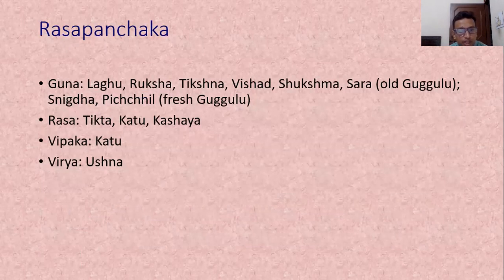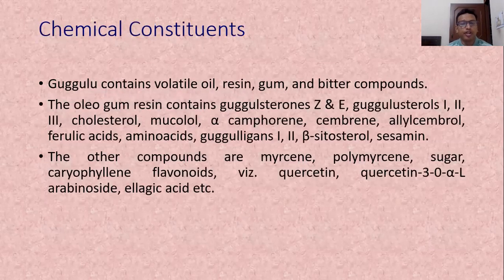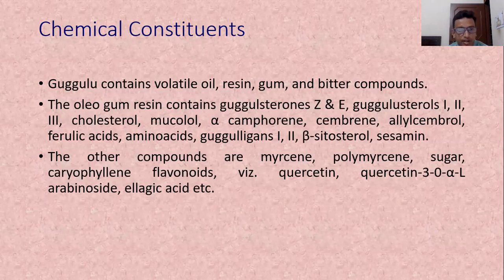The rasa of Gugul is tikta, katu and kasai. It has katu vipak and ushna virya. Regarding chemical constituents, Gugul contains volatile oil, resin, gum and bitter compounds. The oleogum resin contains Guggulsterols Z and E, Guggulsterols 1, 2 and 3, cholesterol, mucolol, R-camphorin, sembrin, etc. Other compounds include Myrcene, Polymyrcene, sugar, Caryophyllene, and flavonoids like Quercetin.